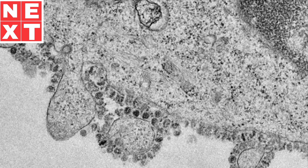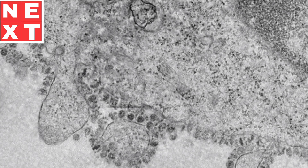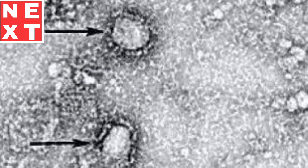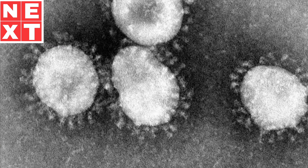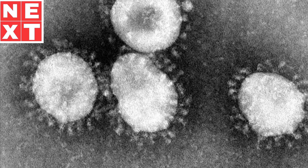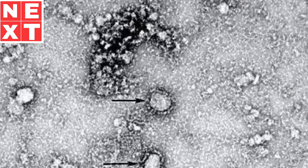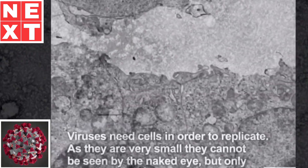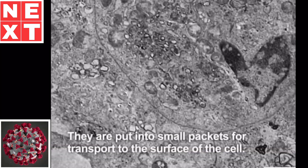This video will give you an idea of how coronavirus looks like. Coronavirus disease 2019 is an infectious disease caused by severe acute respiratory syndrome coronavirus 2. The virus is typically spread during close contact and via respiratory droplets produced when people cough or sneeze. Respiratory droplets may also be produced during breathing.